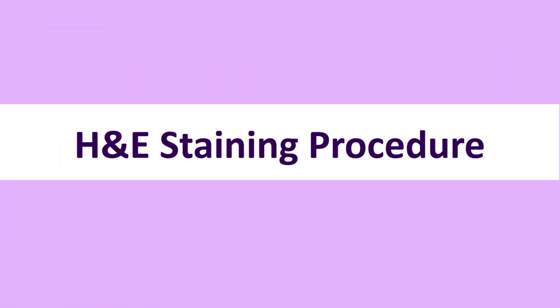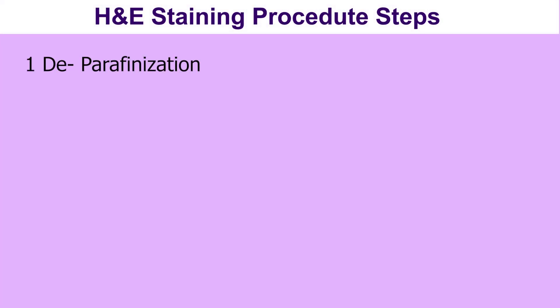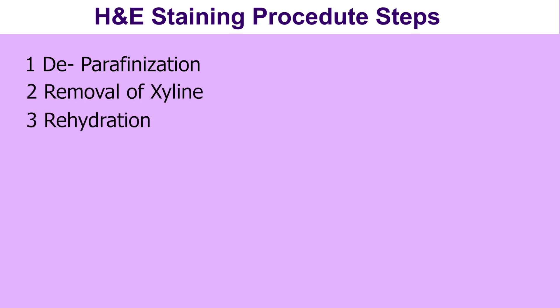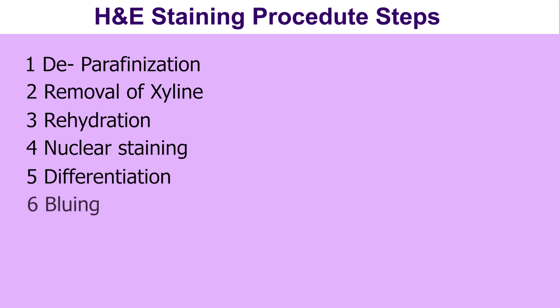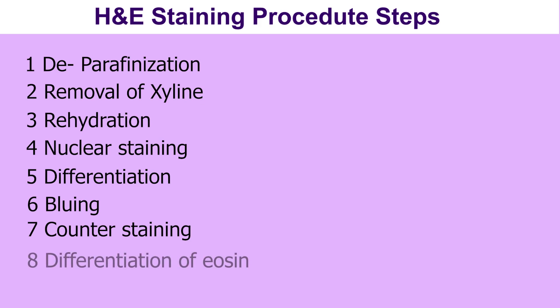When we consider the principle of Hematoxylin and Eosin staining procedure, we can divide it into 10 steps: deparaffinization, removal of xylene, dehydration, nucleus staining, differentiation, bluing, counter staining, differentiation of eosin, dehydration, and clearing.